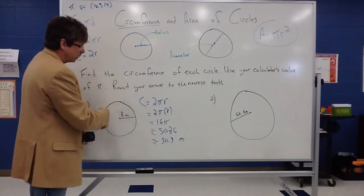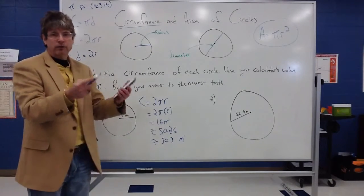So circumference is basically what we call a linear measurement. Area is when we use that square miles.